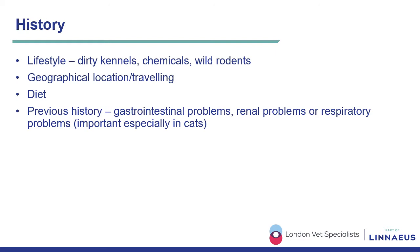Lifestyle can also provide useful information. Dogs living in dirty canals might be predisposed to dermatophytosis or parasitic conditions, and dogs and cats in contact with chemicals might develop irritant contact dermatitis or toxic dermatosis. Contact with wild rodents can predispose to dermatophytosis, especially in Jack Russell Terriers. History of travelling or geographical location is also very relevant — dogs living in or travelling to southern Europe might be predisposed to leishmaniosis.